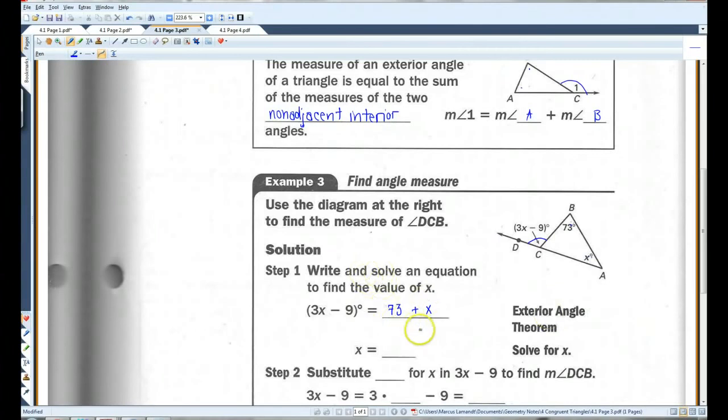Now, if we go about solving for x, it doesn't really give you a lot of room. If I subtract x from both sides, I'm going to get 2x minus 9 equals 73. If I add 9 to both sides, 2x equals 82. Divided by 2. x equals 41.